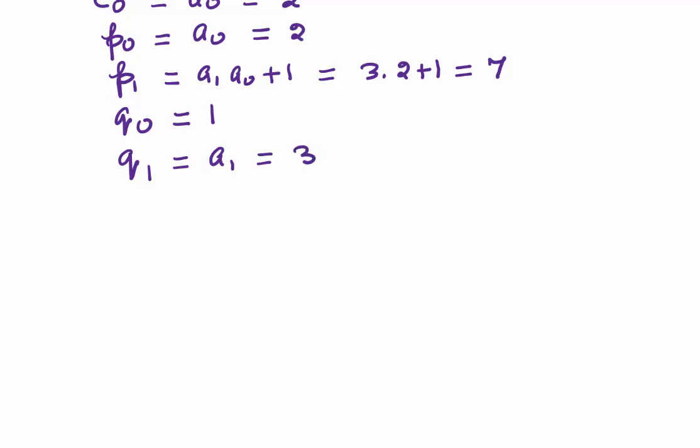How about Q0? Q0 by default will be 1, and Q1 will be nothing but a1, which is 3. So at this stage, C0 = P0/Q0 = 2, and C1 = P1/Q1 = 7/3.